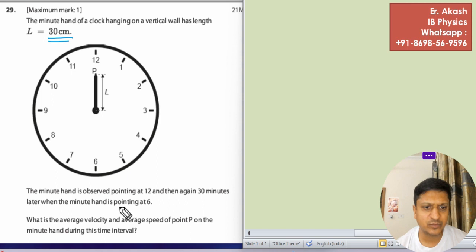What is the average velocity and average speed at point P on the minute hand during this interval?